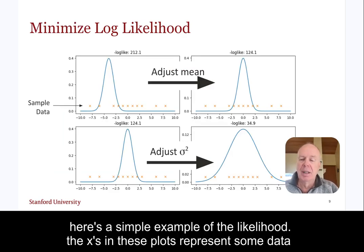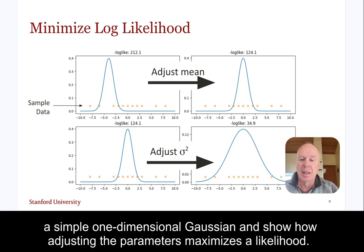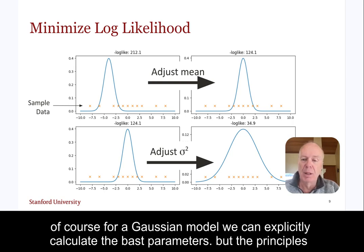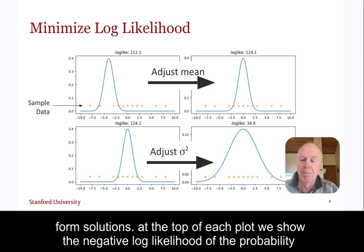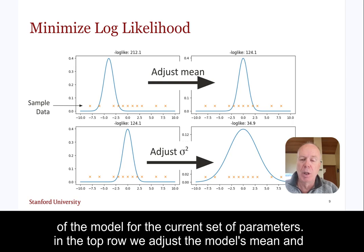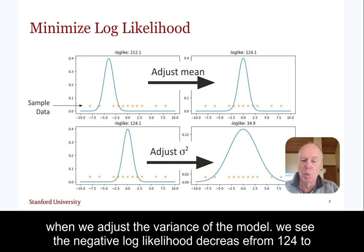Here's a simple example of the likelihood. The x's in these plots represent some data for which we'd like to find a model. We can evaluate the likelihood of a model — in this case a simple one-dimensional Gaussian — and show how adjusting the parameters maximizes the likelihood. For a Gaussian model, we can explicitly calculate the best parameters, but the principles we illustrate here are the same for more complicated models for which there are no closed-form solutions. In the top row, we adjust the model's mean and see the negative log likelihood decline from 212 to 124. In the bottom row, when we adjust the variance of the model, we see the negative log likelihood decrease from 124 to 35.